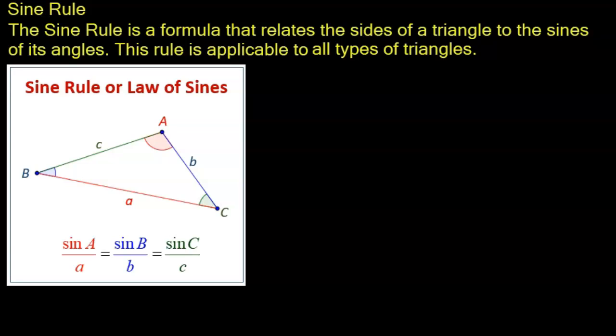So now we want to take a close look at the sine rule, and the sine rule is a formula that relates the sides of a triangle to the sines of its angles. The rule is applicable to all types of triangles, and this gives the sine rule a distinct advantage over Pythagoras theorem and the trig ratios, because those are only applicable to right angled triangles. The sine rule and later the cosine rule are applicable to all types of triangles, whether it's right angled or not.